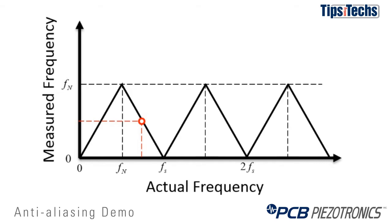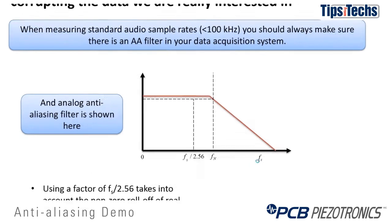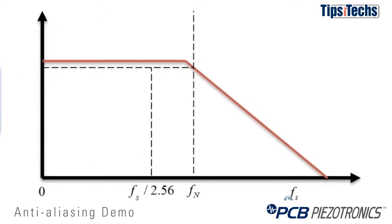So how do we prevent this? We want to use a data acquisition system that has a built-in anti-aliasing filter when taking audio data. An anti-aliasing filter is an analog filter that goes in front of the analog-to-digital converter in your data system. All it does is filter off the high-frequency components so that they don't alias back and corrupt your low-frequency components.